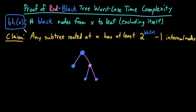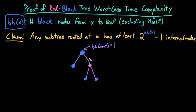First, let's define bh(x) to denote the number of black nodes from any given node x to a leaf, excluding x itself. Here's a simple example of a red-black tree. The black height of the root is 1, because even though paths to a leaf have two black nodes, I have to exclude x itself. So when counting at the root, I cannot count the root itself — that gives us one black node per path, so the black height of the root is 1.